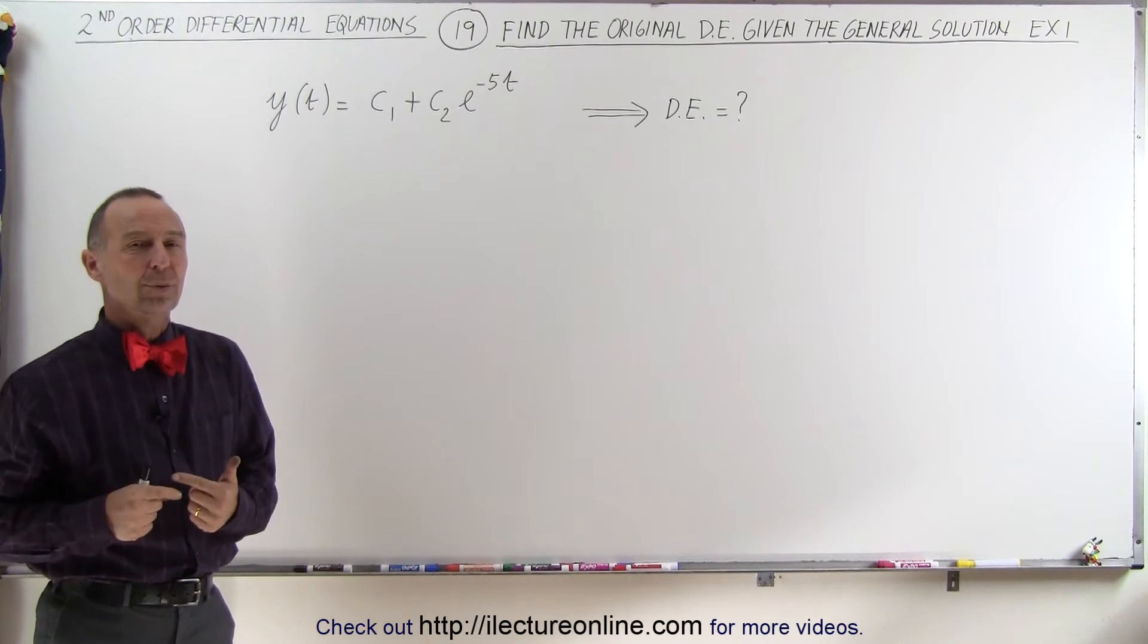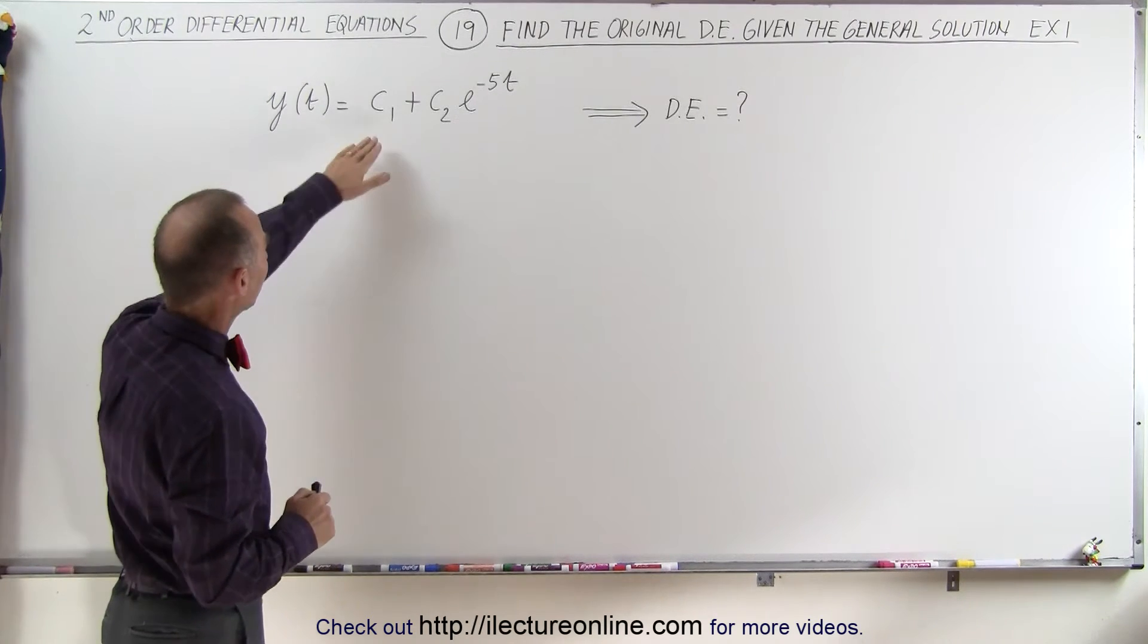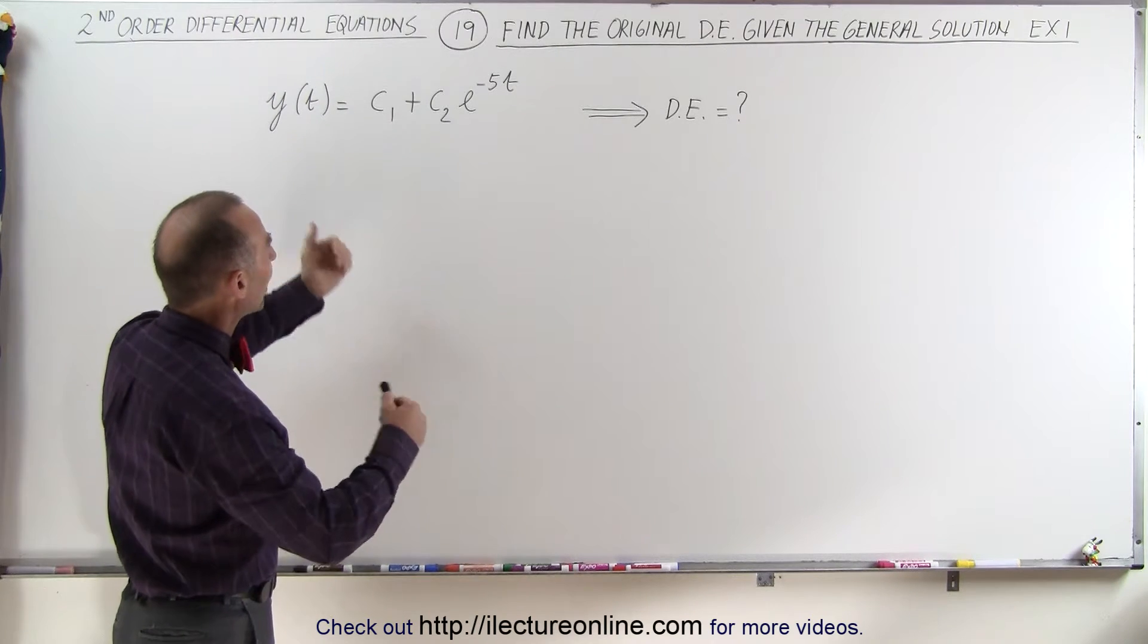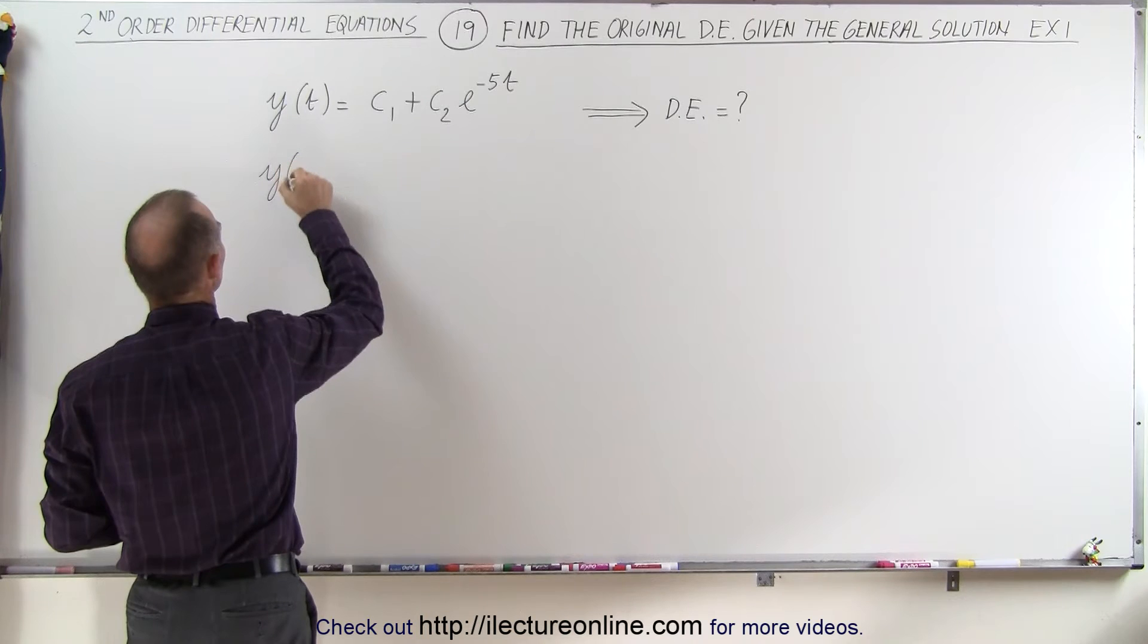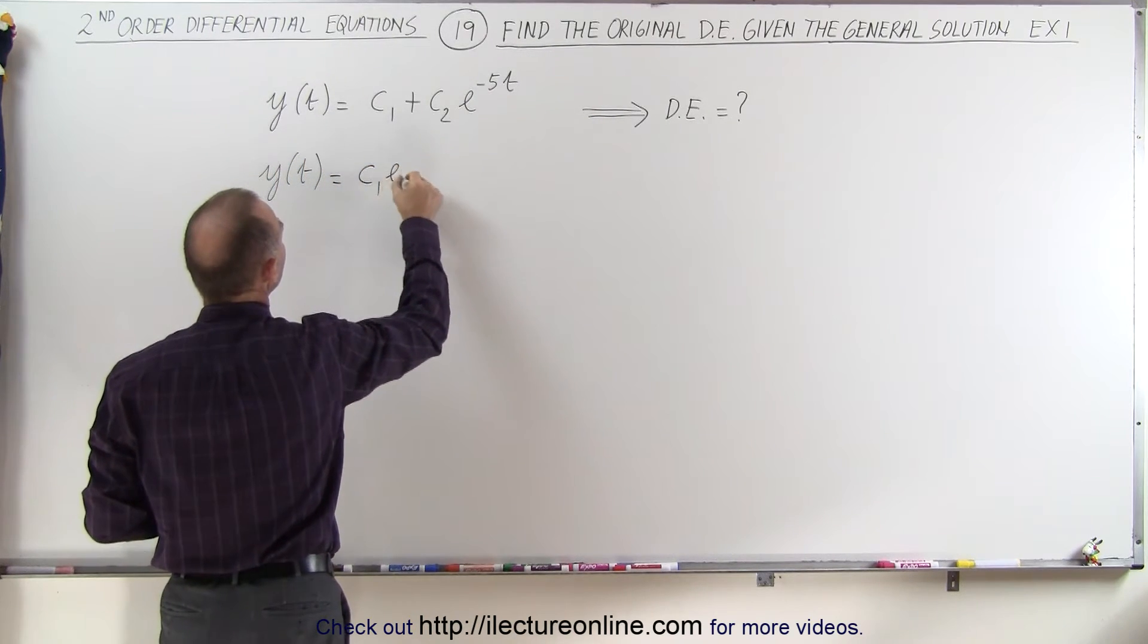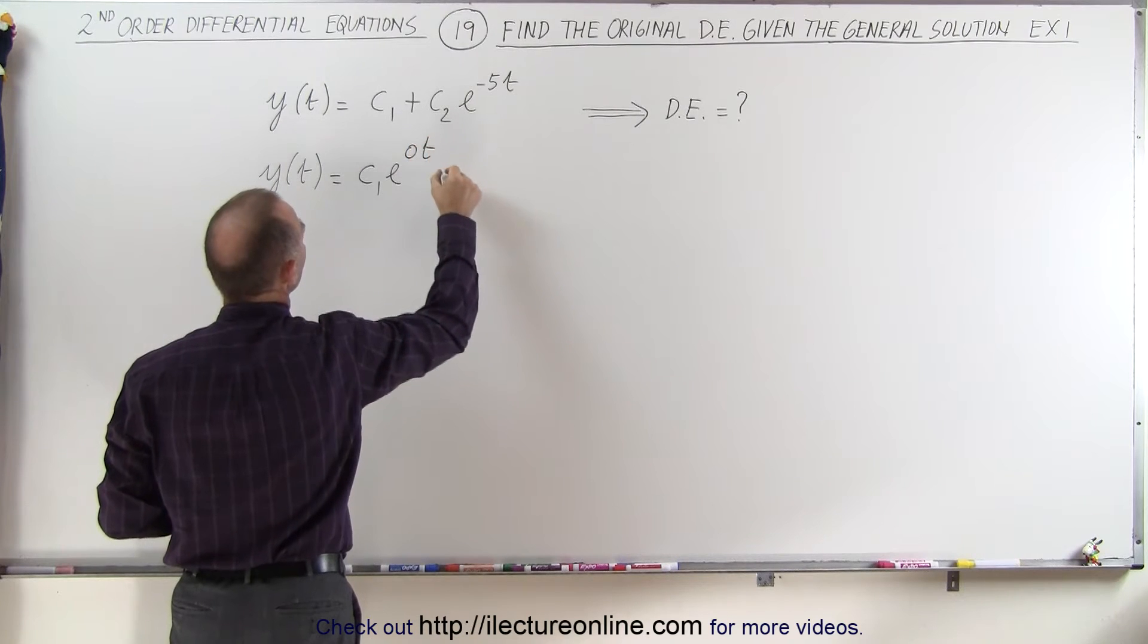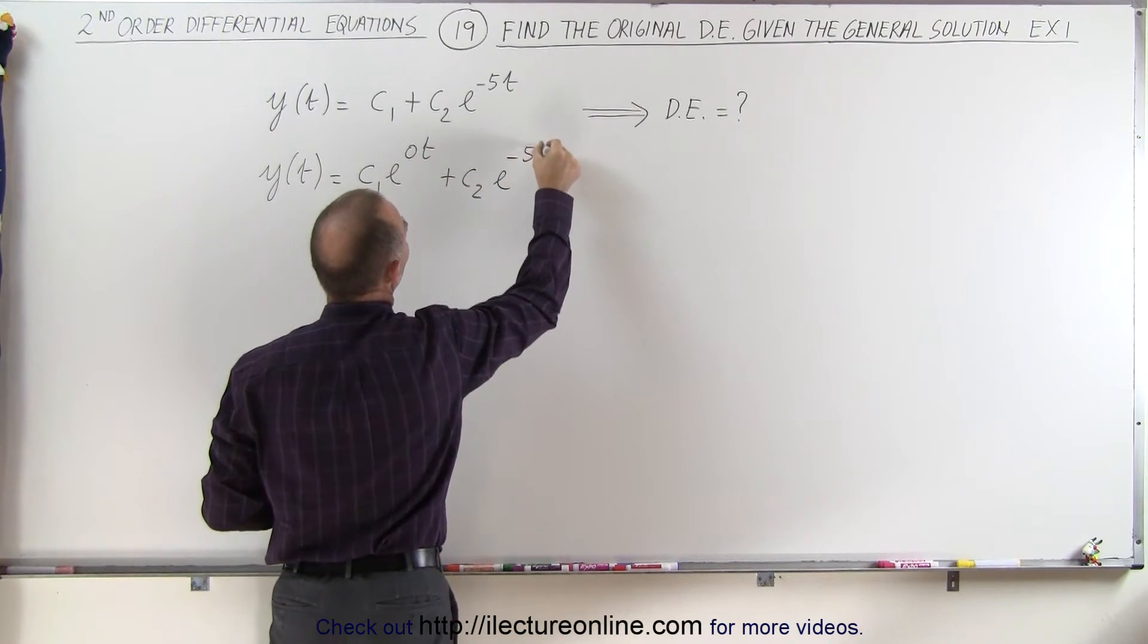Now we're going to do everything backwards, and that helps us understand how the whole process works. So first of all, we're going to take a look at this and rewrite it just slightly. We're going to rewrite it like this: y is a function of time is equal to c1e to the 0t plus c2e to the minus 5t.